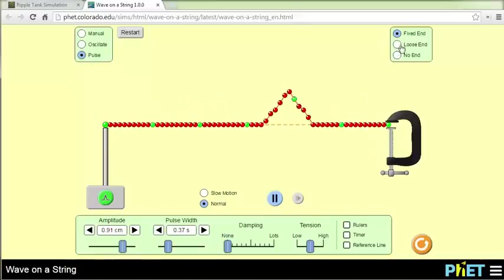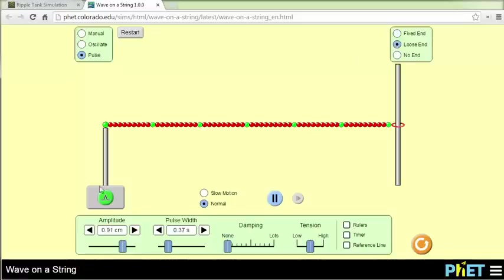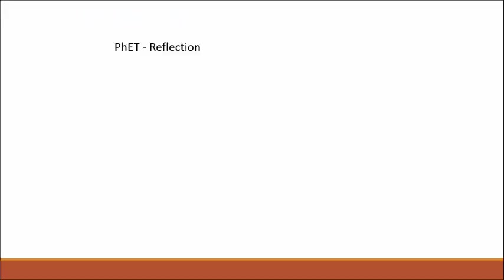If we have a loose end, then there's nothing to pull down on the string, but the wave still gets reflected. It just doesn't get inverted. Now this end is still fixed, so we get inverted here, but not inverted there. Alright, so that's the first property, just the idea that waves will reflect.